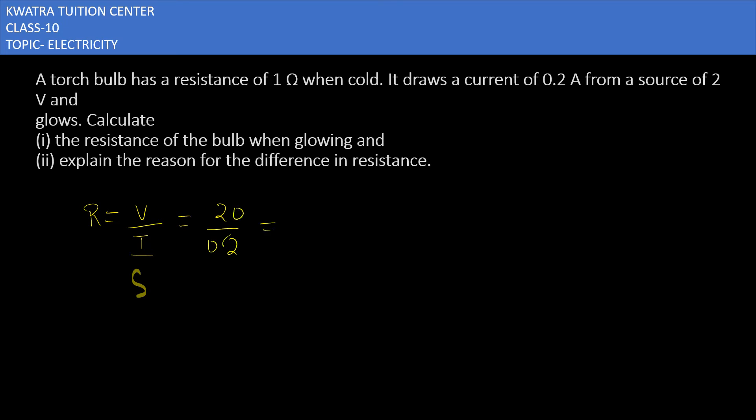Remove the point. 20 over 2 will be 10 ohm. The first part is done. Resistance of bulb when glowing will be 10 ohm.